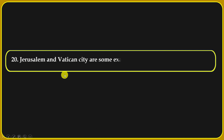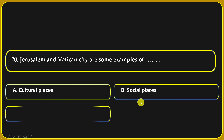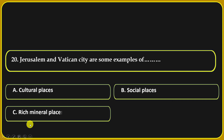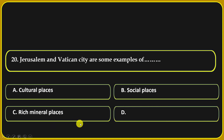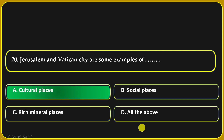Jerusalem and Vatican City are examples of: cultural places, social places, rich mineral places, or all of the above. Cultural places is the correct answer.